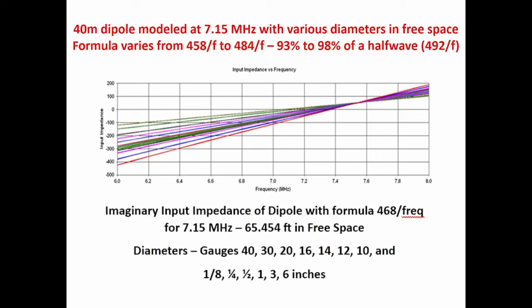Here's a plot of every gauge of wire and diameter from number 40, 30, 20, and on up to six inches diameter at 40 meters, 7.15 MHz. You're looking at where the imaginary part goes through zero. It's anywhere from 93 to 98 percent of 492 over F, which means it's 458 to 484 — not 468 — for every diameter. And this is in free space.